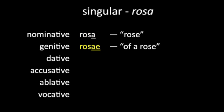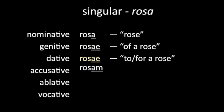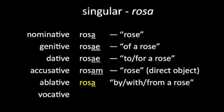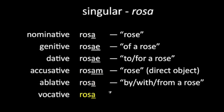'Rosae', which is 'of a rose'; 'rosae', meaning 'to or for a rose'; 'rosam', which is 'rose' as the direct object; 'rosa', meaning 'by, with, or from a rose'; and 'rosa' — O rose — as the vocative.